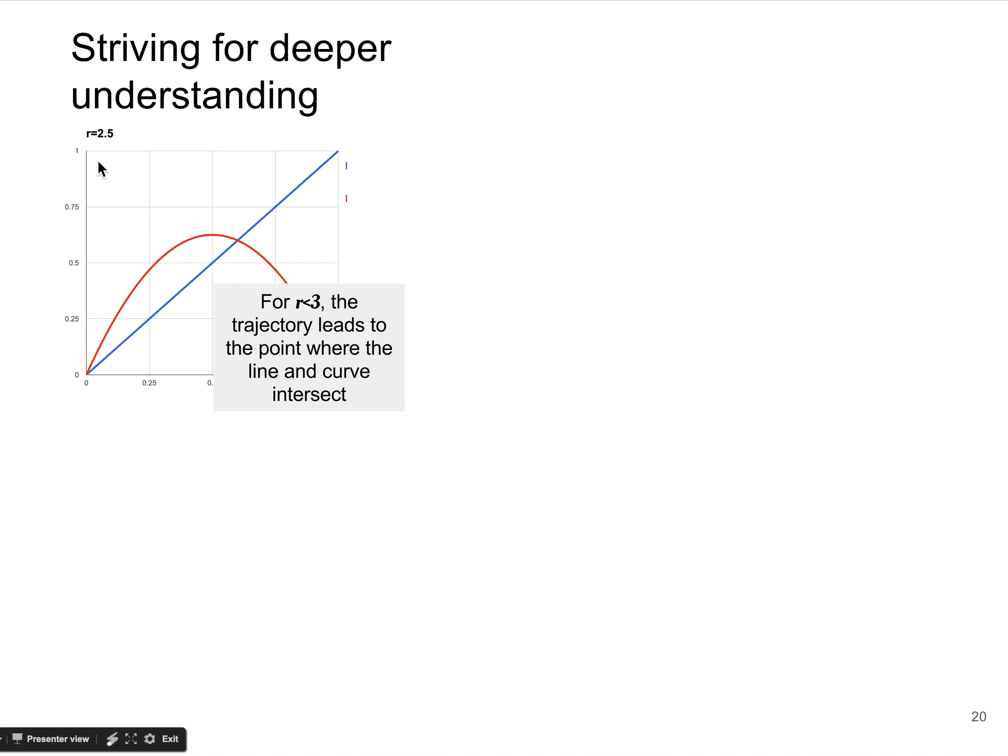So for r less than 3, the 2½ is less than 3, the trajectory leads to this point right where they intersect. Let's look more closely at this. Imagine we zoomed in on this. You can see that this angle is larger than 90 degrees at the point of intersection. You can kind of see it here. It's easier to see here.